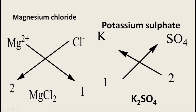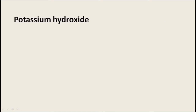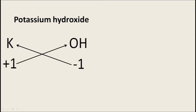While writing molecular formula, we write electropositive radicals at the beginning and electronegative radicals at the end. The next compound is potassium hydroxide: potassium K has charge +1 and hydroxide OH has charge -1. By the crisscross method, K takes 1 and OH takes 1, and the molecular formula becomes KOH. There is no need to write the subscript 1.